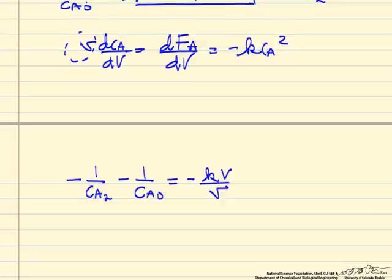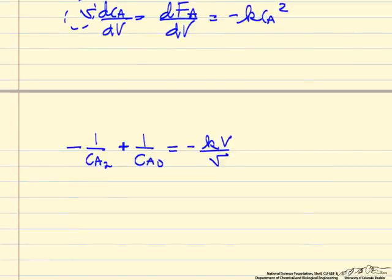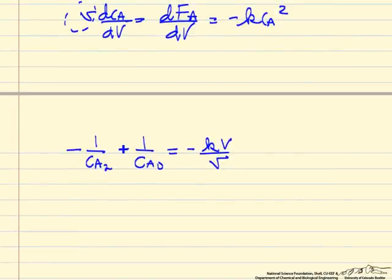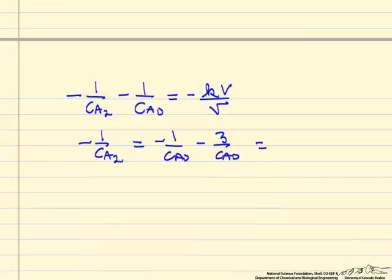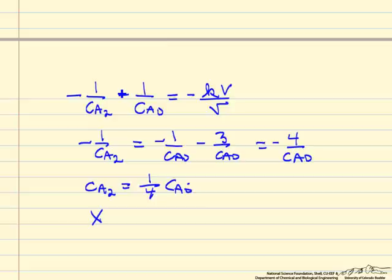We do the exact same integration and we are trying to solve for Ca2. So minus 1 over Ca2 is equal to minus 1 over Ca0. And then KV over V is 3 over Ca0. So this is minus 4 over Ca0, or Ca2 is 1 fourth of Ca0, which means the conversion of A now in the new system is 0.75.